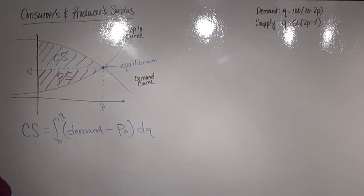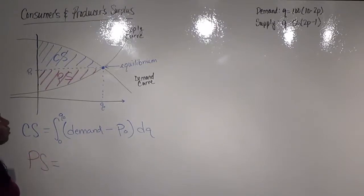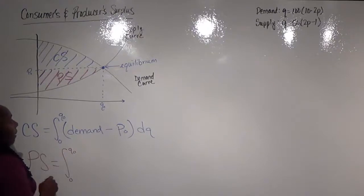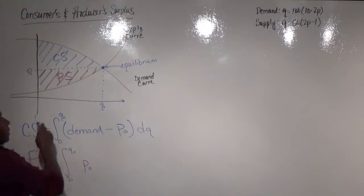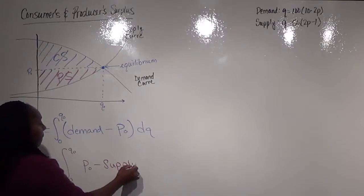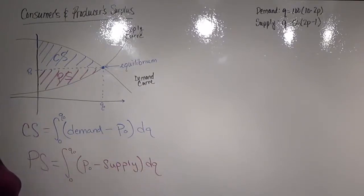That would be our formula for the consumer surplus. For the producer surplus, we can do the same thing. Producer surplus, again, starts at zero and goes out to q-naught. Our upper curve in this case is our equilibrium price, and our lower curve is our supply. Again, both are in terms of q.